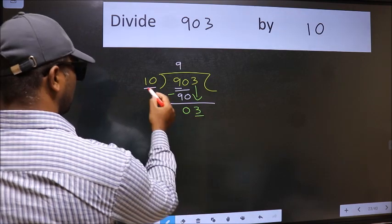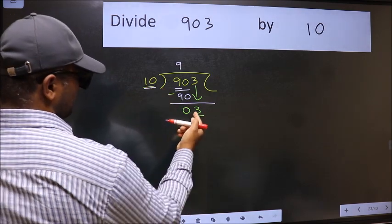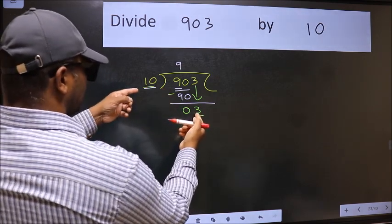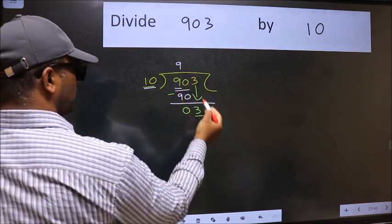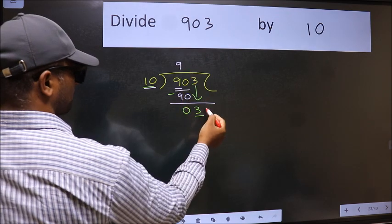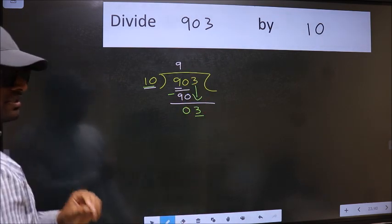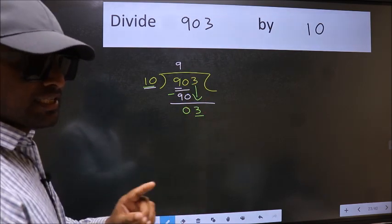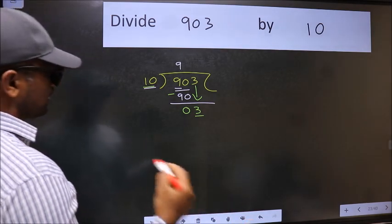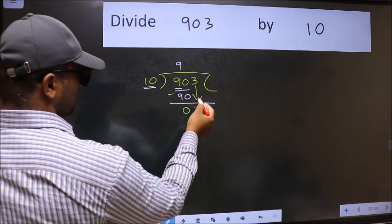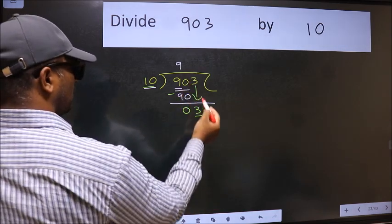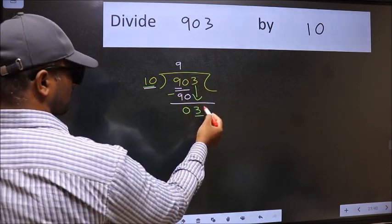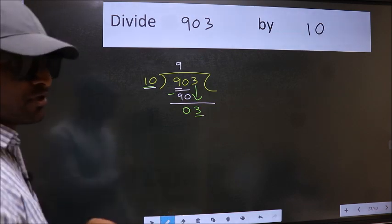Here we have 3 and here 10. 3 is smaller than 10. So what many do is they directly put dot, take 0. Which is wrong. Why is it wrong? Because just now you brought this number down. And in the same step, you want to put dot, take 0. Which is wrong.